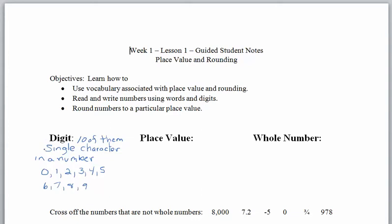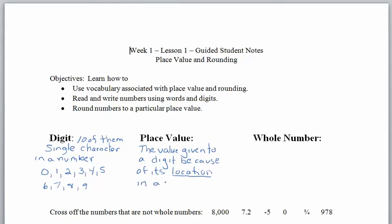Place value is the value given to a digit because of its location in a number — that's why it's called place value. On our tests and quizzes coming up, you should expect some vocabulary questions. Take some time to put these vocabulary words on note cards or quiz yourself. We should understand the meaning of the words digit, place value, and whole number.